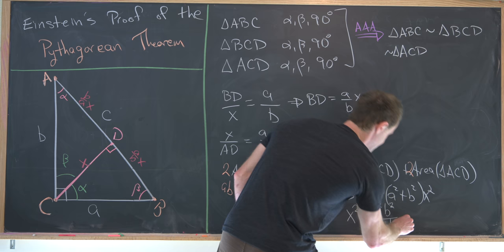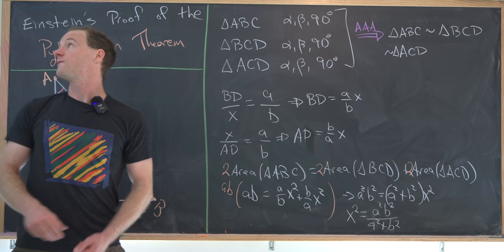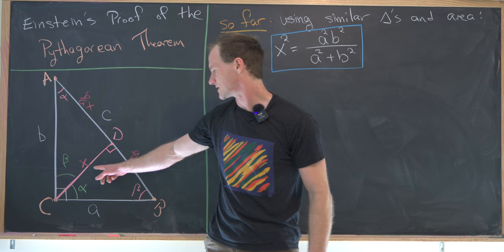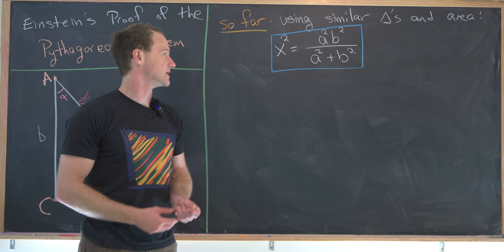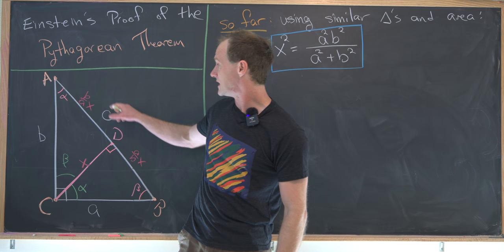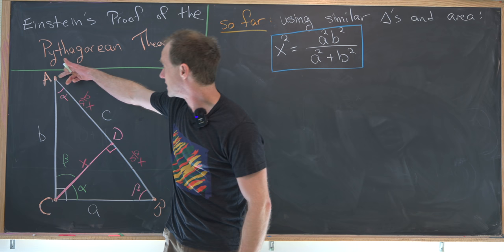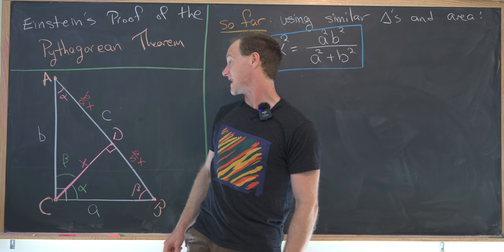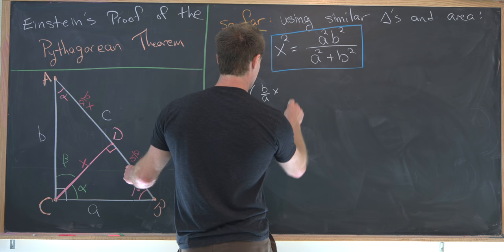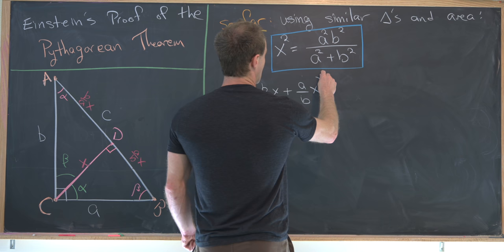So far, using similar triangles and area, we determined that X² equals A²B² over (A² + B²), where X is the length of the line normal to AB. Now we want to finish the Pythagorean theorem proof, showing C² equals A² + B². We know C is the length of line segment AB, which has been decomposed into length AD and length BD. So C² equals (AD + BD)² which is ((B/A)·X + (A/B)·X) squared.